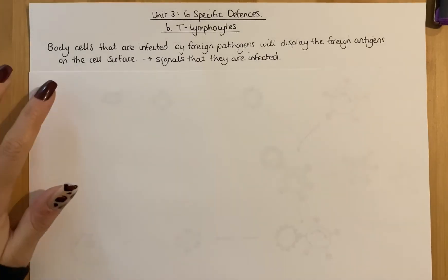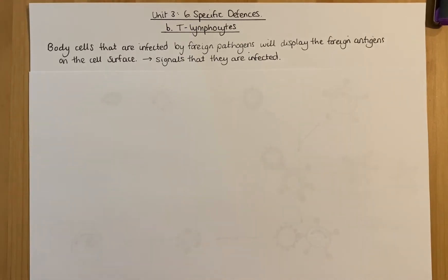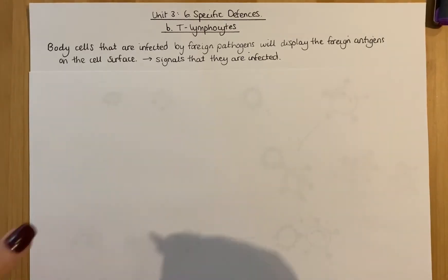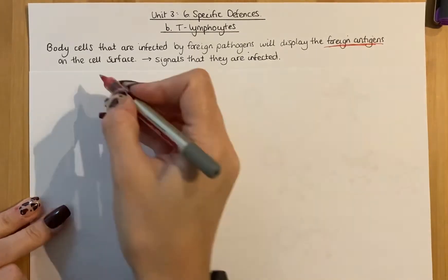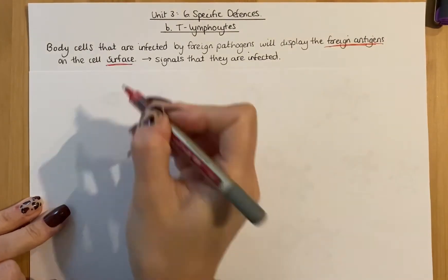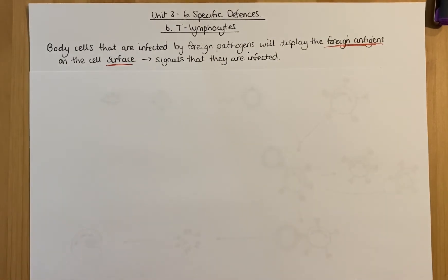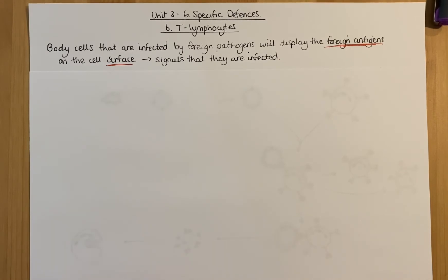If your body cells are infected by a foreign pathogen, which will have antigens on its surface, the infected body cell will display those foreign antigens on their surface. The purpose of that is basically to tell your body and your immune system that the cell is infected, so that it can bring about a specific immune response.